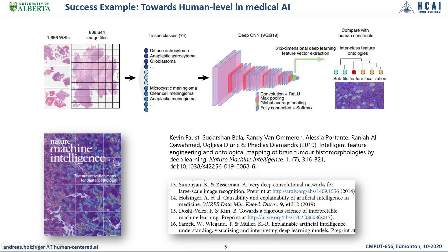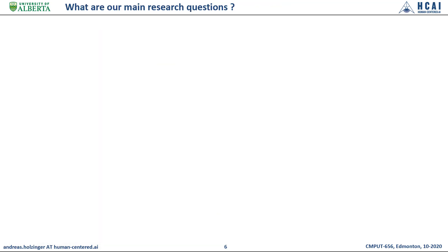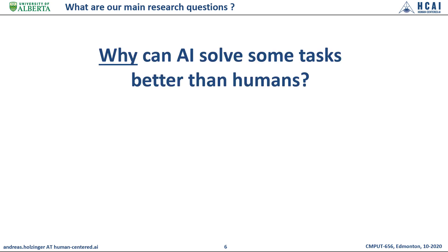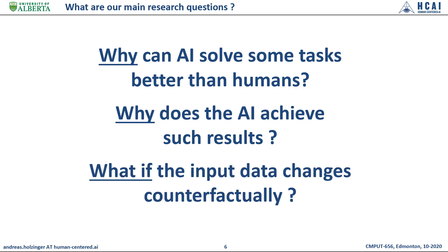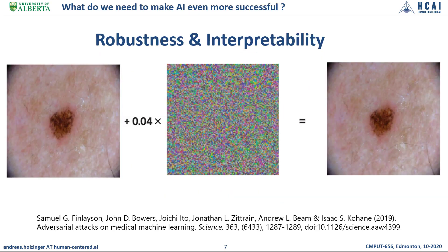This leads us perfectly to the research topics we are interested in. Together with my group, I am interested in helping to answer three questions: Why can AI solve some tasks better than humans? Why does AI achieve such results — and in the medical domain, many diverse data contribute to a result. And what if I change, replace, disturb, or remove input data — or more technically, what if the input data changes counterfactually? Finally, what do we need to make AI even more successful? In short: robustness and interpretability.